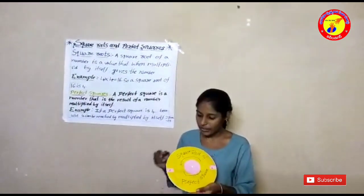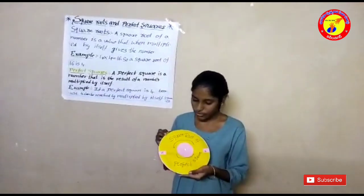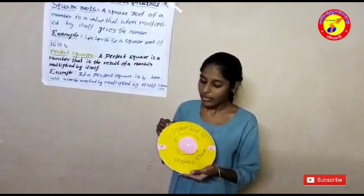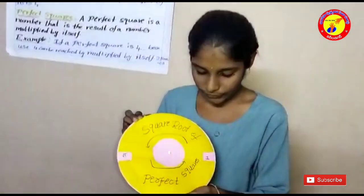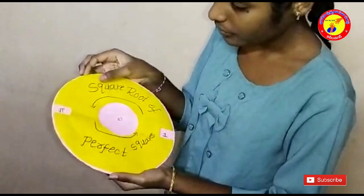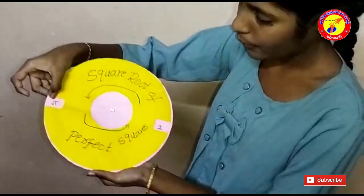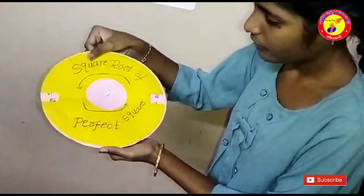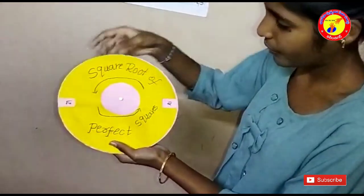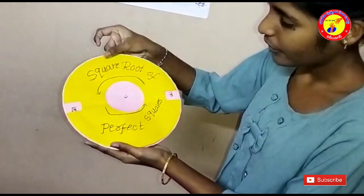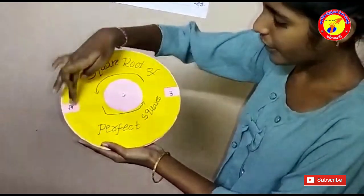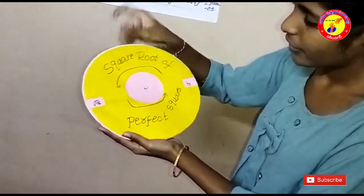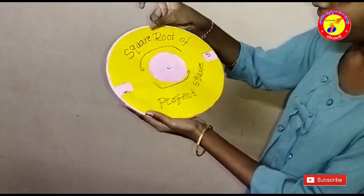Now I did an experiment about square roots of perfect squares. Root 1 is equals to 1. Root 4 is equals to 2. Root 9 is equals to 3. Root 16 is equals to 4.